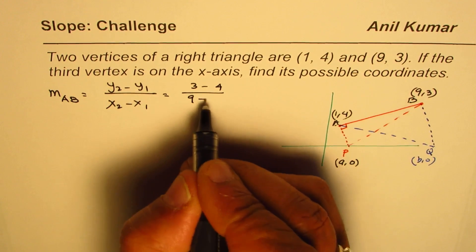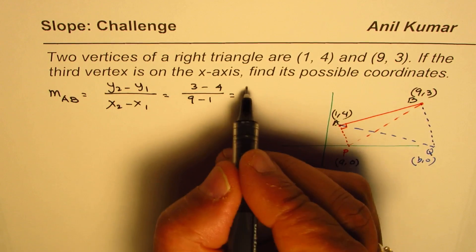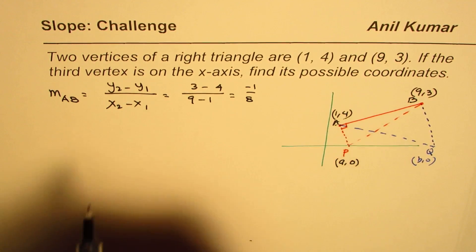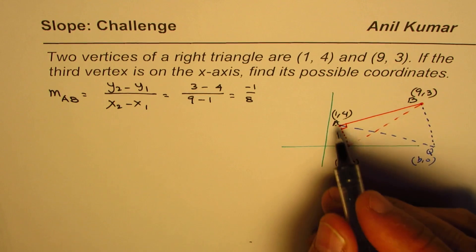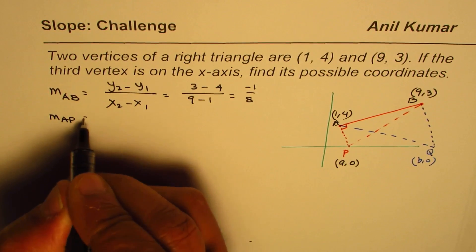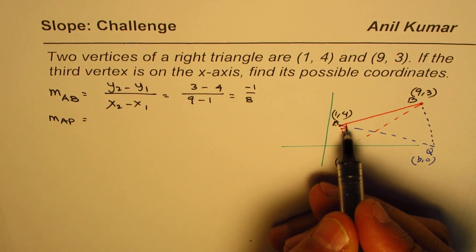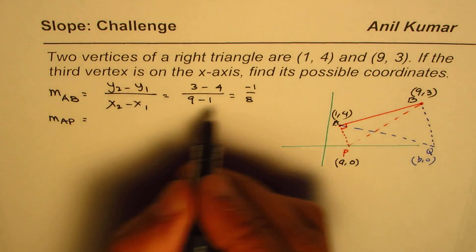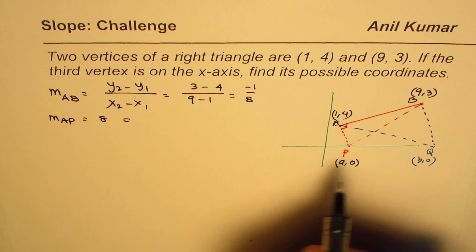Slope of line AP should be negative reciprocal since this is a right triangle. So that would be 8. But if the coordinates are (a, 0), in that case it would be (4 - 0)/(1 - a).